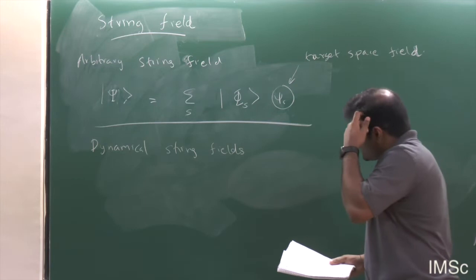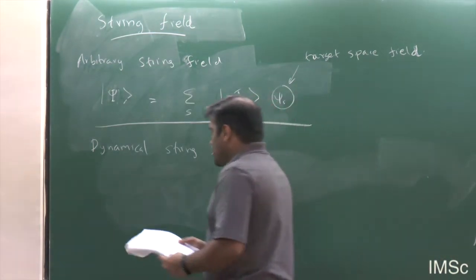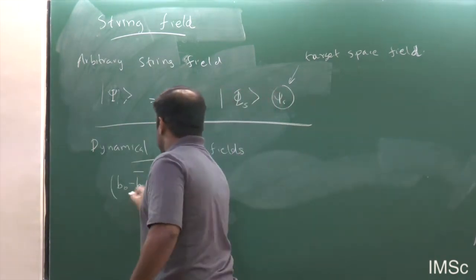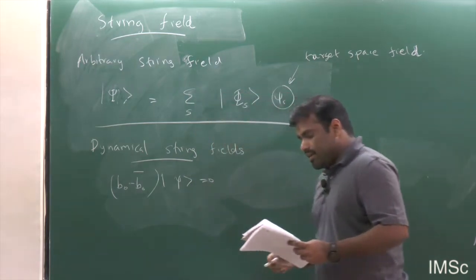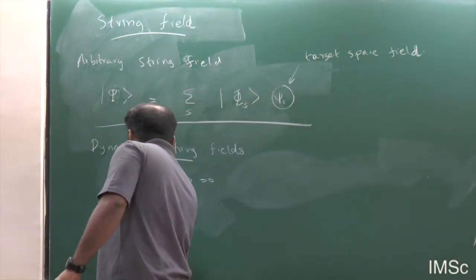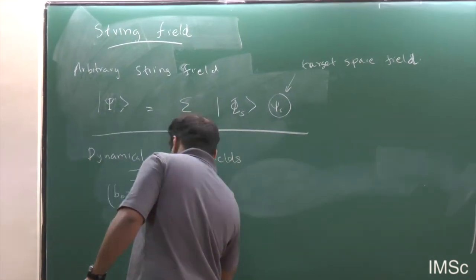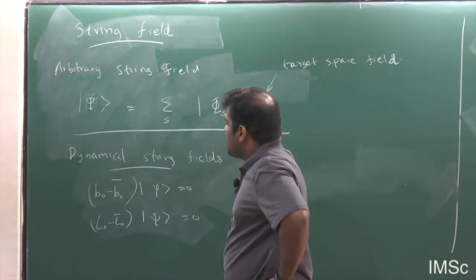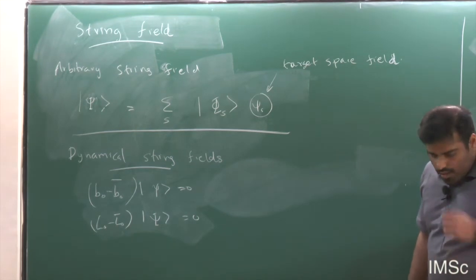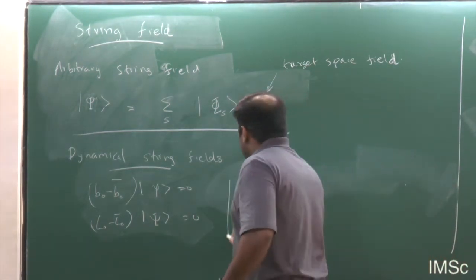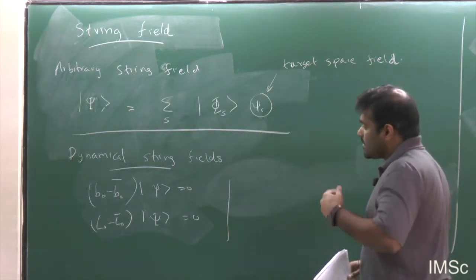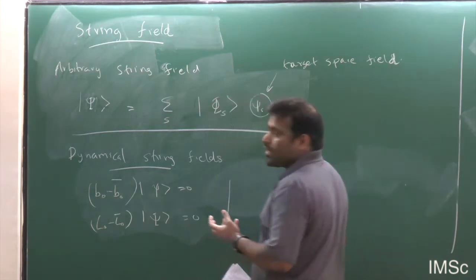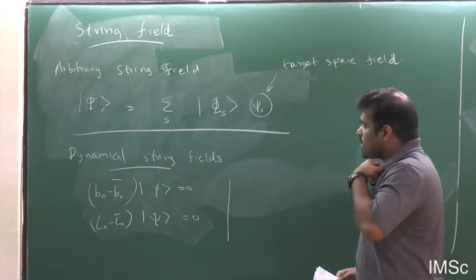An arbitrary string field is not what actually enters into the construction of the action for string field theory. The string fields that enter are called dynamical string fields. A dynamical string field has certain properties: it should be annihilated by the operator (B_0 − B̄_0), and also annihilated by (L_0 − L̄_0). If your string field satisfies these two conditions, you say that you have a dynamical string field.